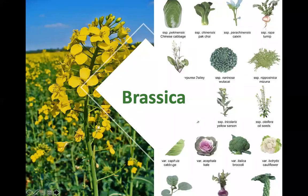Any of our brassicas — canola, cabbage, broccoli, cauliflower, Brussels sprouts, kale, bok choy — they're all part of the brassica family. If you want to let them go to flower, the bees love them. Even here at home I've got a lot of wild canola growing because the farmer across the road still grows it, and I've seen the homoelictus bees on the canola flowers. They are good for any kind of bees.